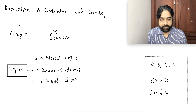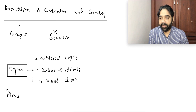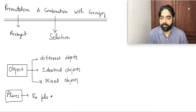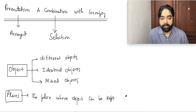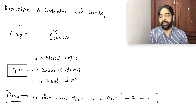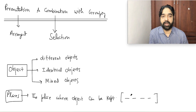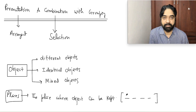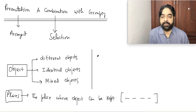Similarly, there are 'places' — where an object can be kept. We draw places like this. On one place, only one object can come. A 'group' is different — more than one object can be in a group. But on one place, only one object can come.